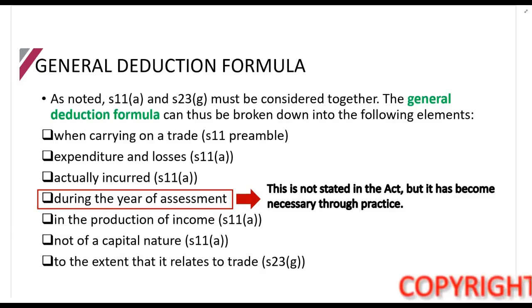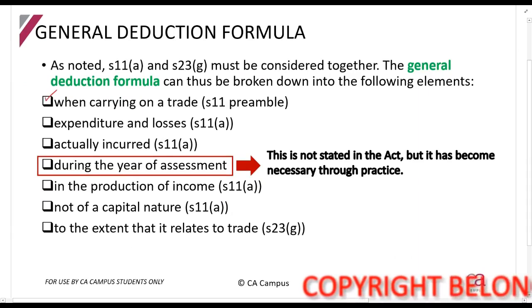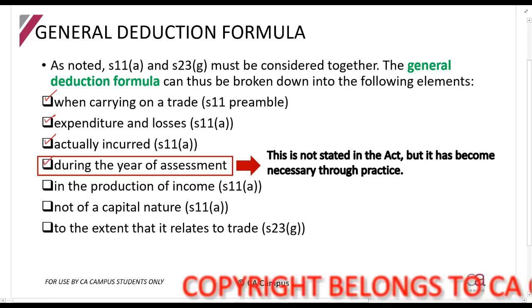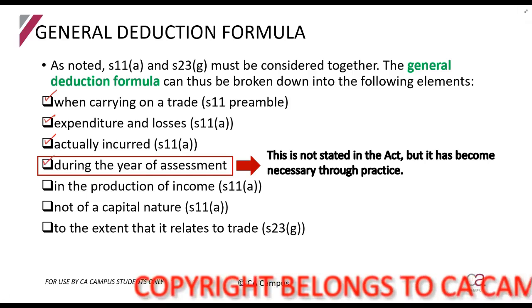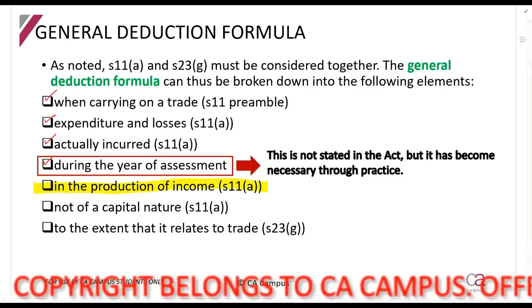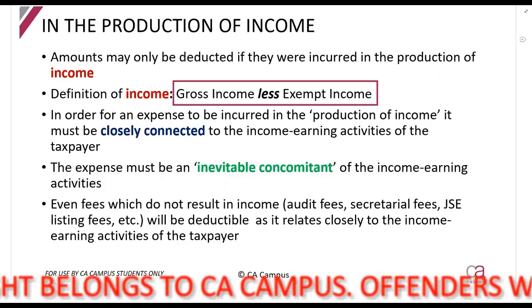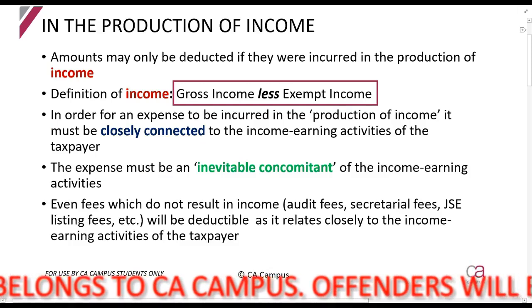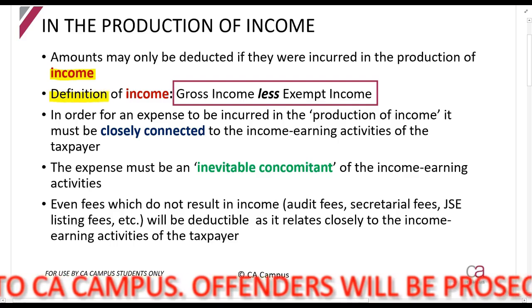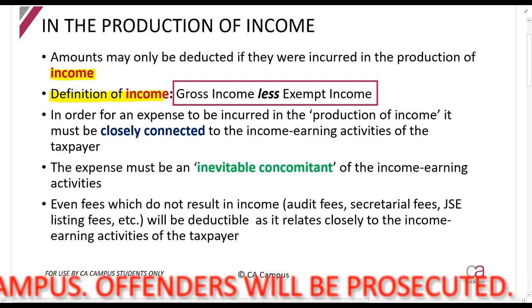If we look at the General Deduction Formula, we have now discussed already when carrying on a trade, expenditure and losses actually incurred during the year of assessment. Now we are going to look at the next part which means in the production of income. This is one of the more important parts of the General Deduction Formula. What does in the production of income mean? First up, let's remember what income means.